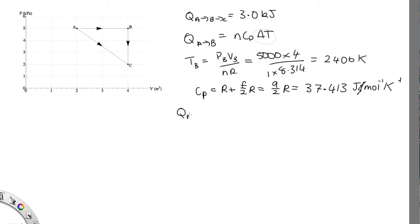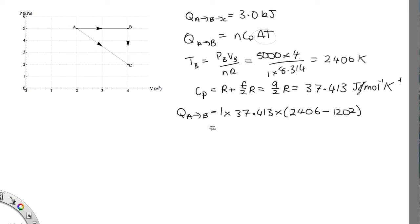So Q from A to B is equal to 1 times 37.413 times the change in temperature. The final temperature is 2,406 kelvins and the initial temperature — the temperature at A — we calculated earlier and found it was 1,202. So this is equal to 45,045 joules.